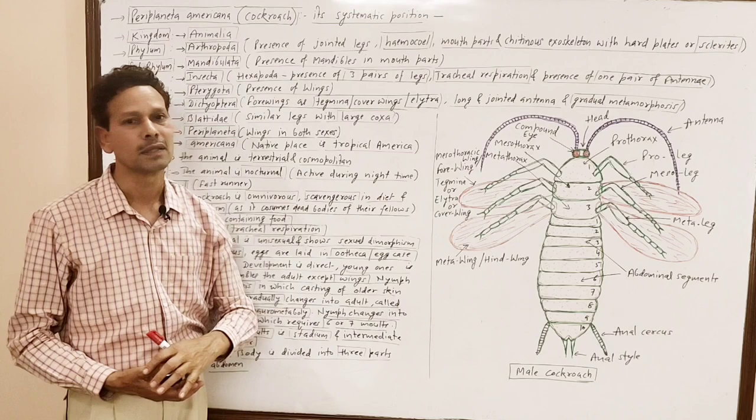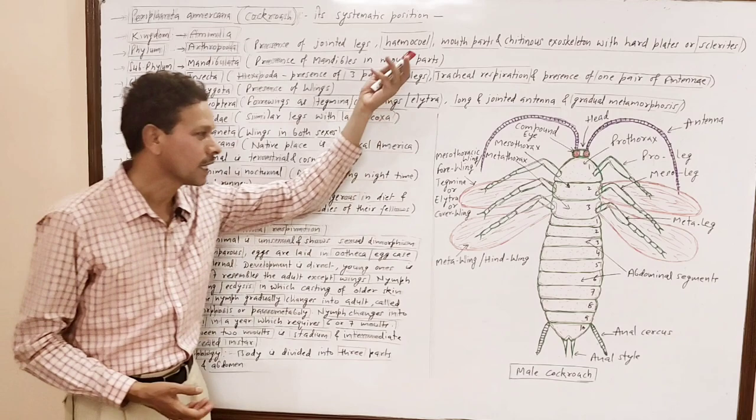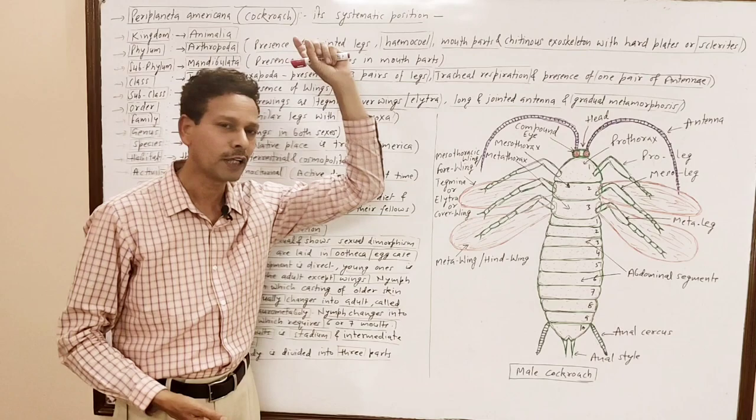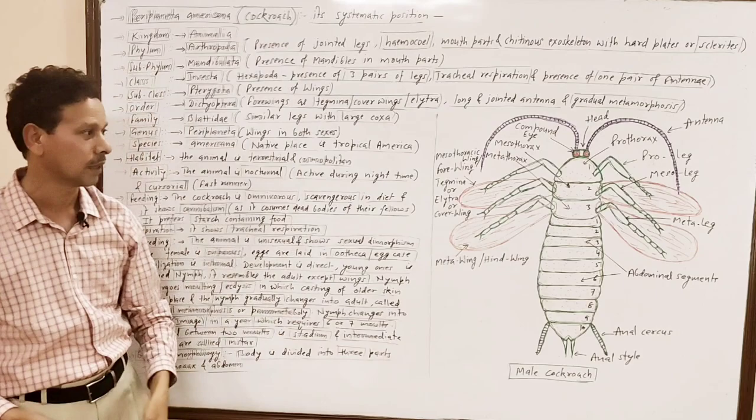Respiration: in case of insects and cockroach, respiration takes place through special tubes called trachea — this is tracheal respiration. In case of earthworm, the respiration occurs through the skin — that is cutaneous — but in case of cockroach, the respiration is tracheal.